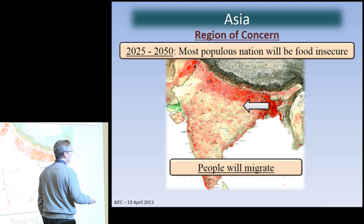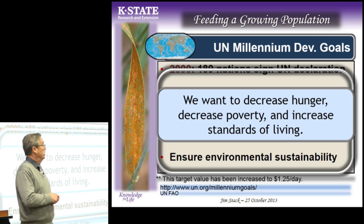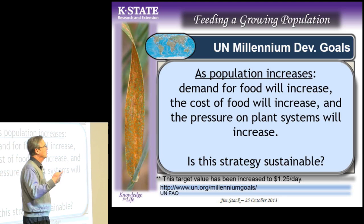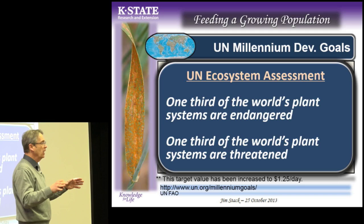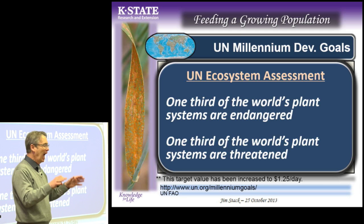So we go back to our goals: decrease hunger, decrease poverty, and increase standards of living. As population increases, demand for food and all these pressures on plant systems are going to intensify in your lifetime. I often get told, 'wow, how depressing.' No — how exciting. You're in a position to choose a career that matters, that actually matters. These things are going to happen, they need to get resolved and they will get resolved. Be part of that.